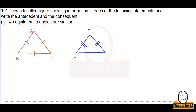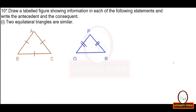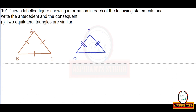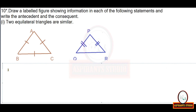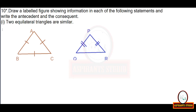Question 10: draw the figure and write the antecedent and consequent. For 'two equilateral triangles are similar,' construct two equilateral triangles — triangle ABC and triangle PQR. Label them properly and mark equal sides with similar markings. In triangle ABC, mark all three sides equal; in triangle PQR, mark PQ = PR = QR with equal markings.